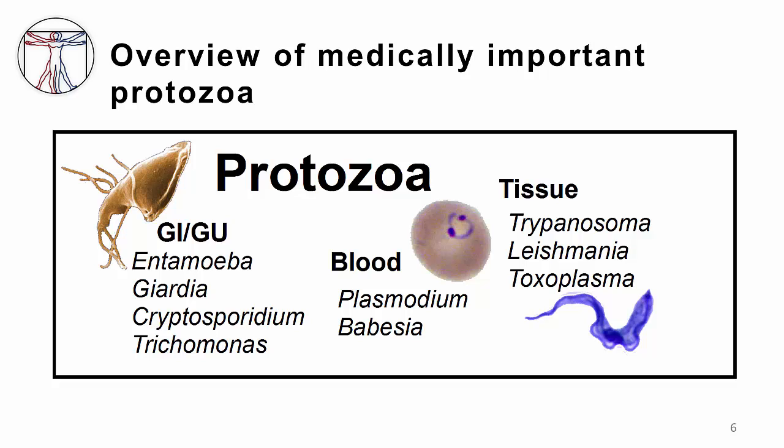Let's start with Trypanosoma. There are two main species of Trypanosoma that are medically important: T. cruzi and T. brucei. T. brucei is mainly a pathogen that causes CNS disease and will be discussed in the CNS protozoal section as well. We will focus on T. cruzi in this section.